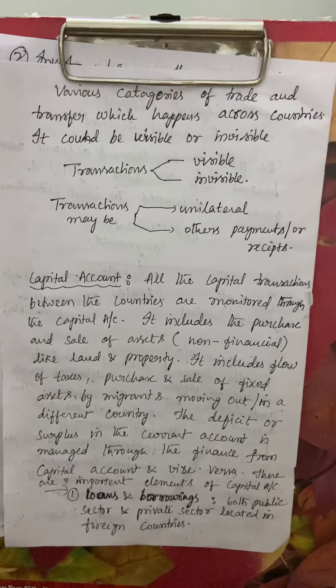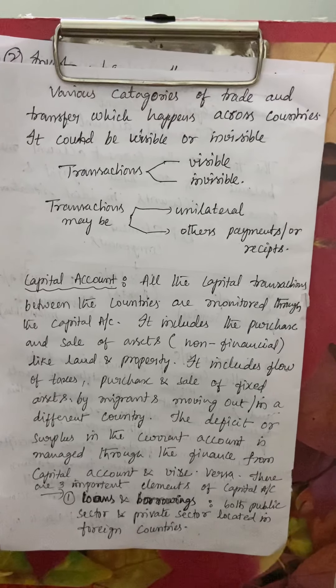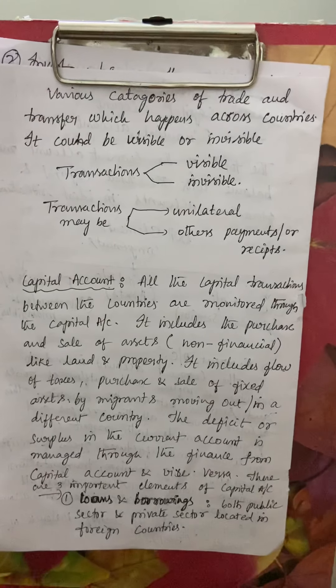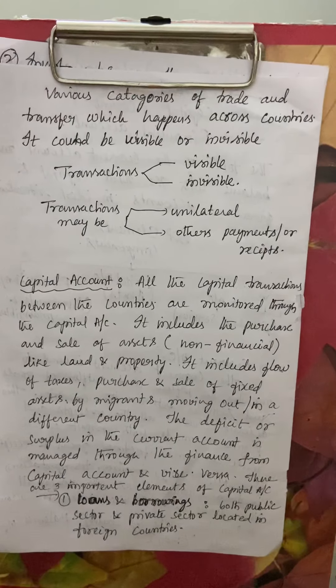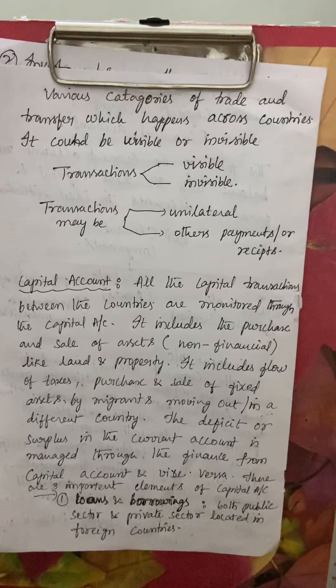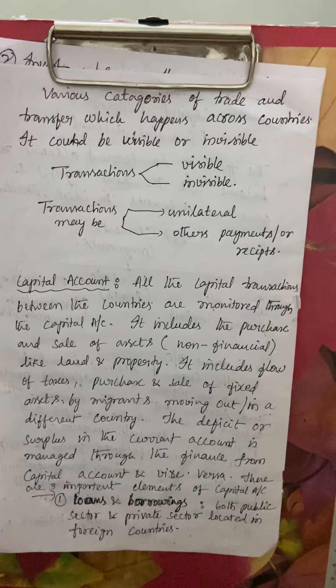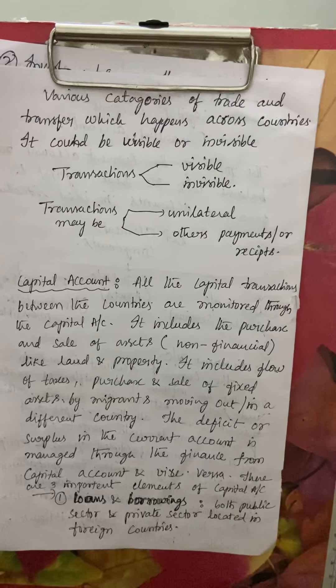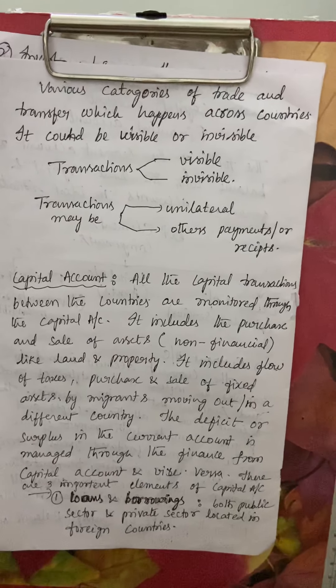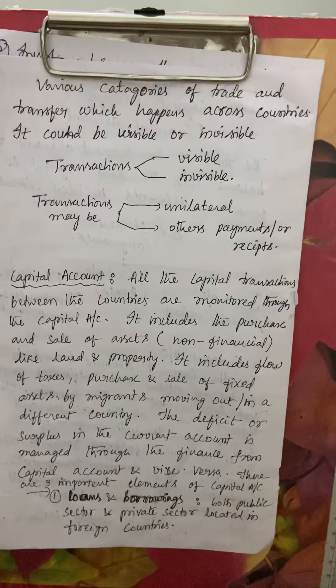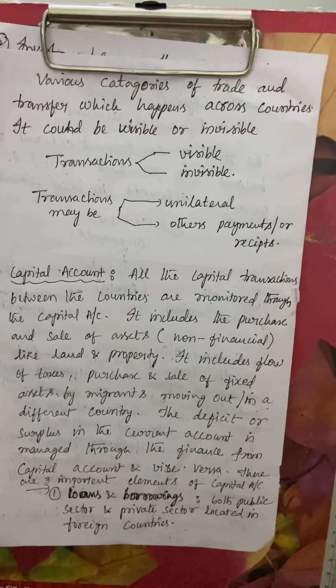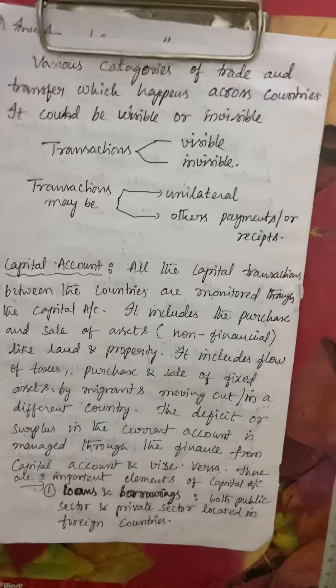In the current account, various categories of trade and transfer which happen across the country are taken into account. Transactions can be divided into visible or invisible items.